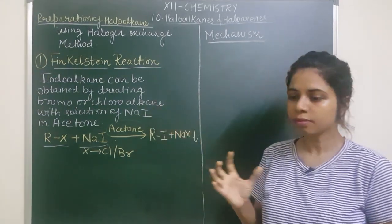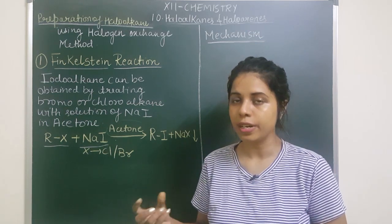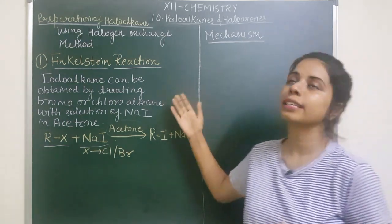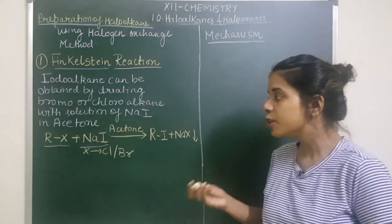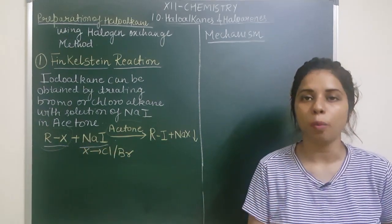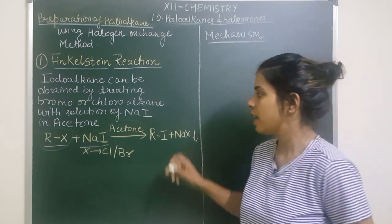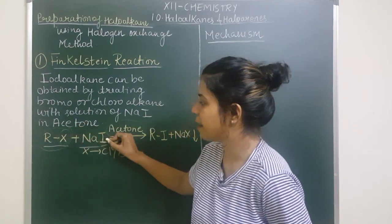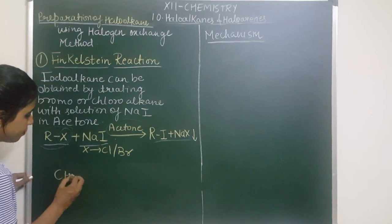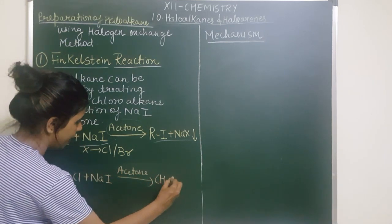Finkelstein reaction is specifically used when you want to make an iodoalkane — an iodine-containing alkyl compound. In the Finkelstein reaction, halogen exchange takes place in the presence of acetone as a solvent. This X is replaced by I. The reaction is simple. For example, if I take CH3Cl and treat it with NaI in the presence of acetone, I get CH3I plus NaCl.